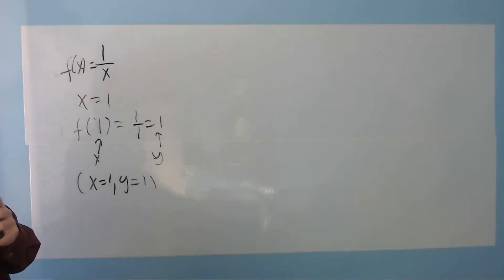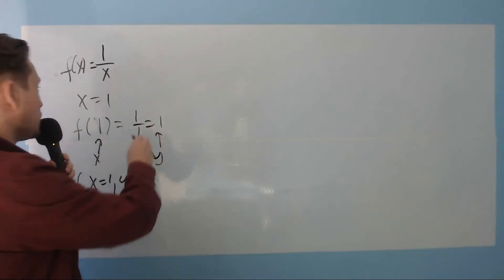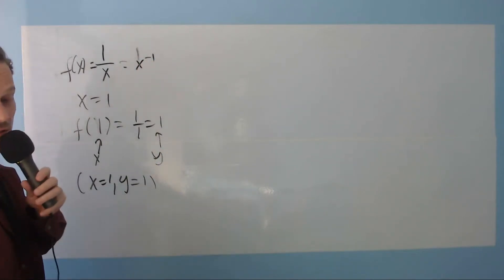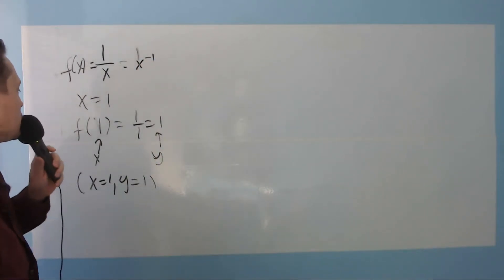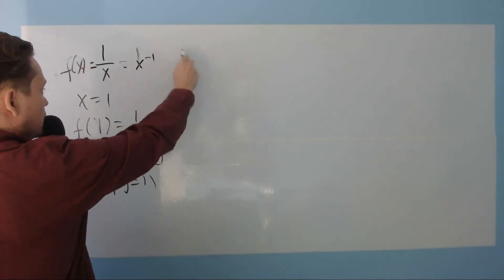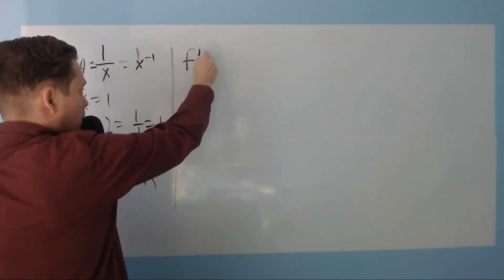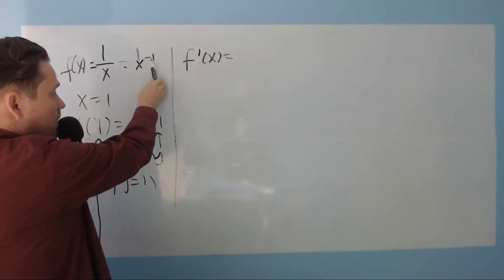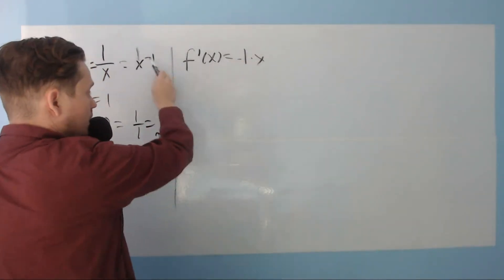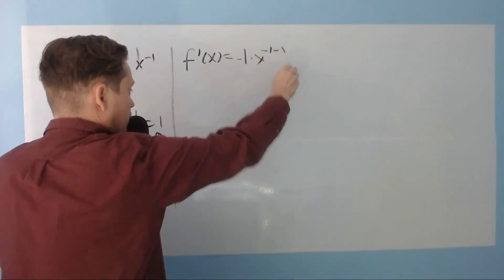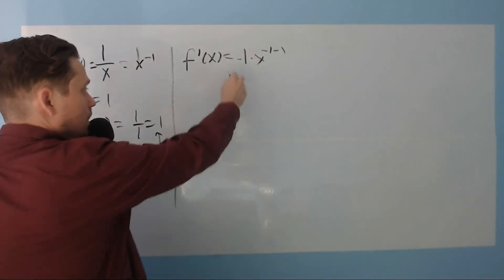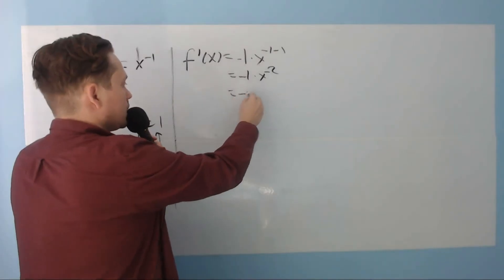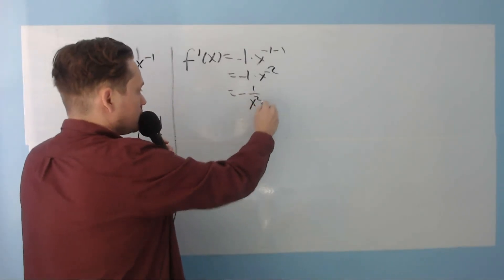The next stage is to find the derivative. I'm going to rewrite the function as x to the negative first, because it's easier to apply the power rule. By the power rule, you bring the negative 1 down, multiply by x, and subtract 1 from the exponent, giving negative 1 times x to the negative second, commonly written as negative 1 over x squared.